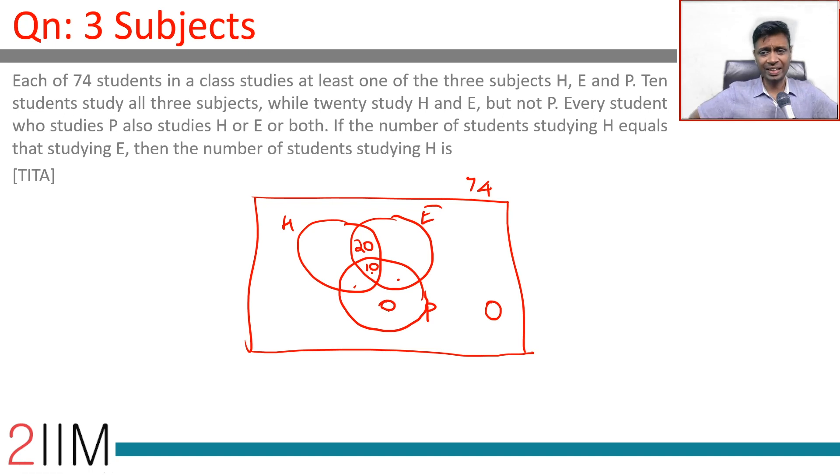The number of students studying H equals that studying E. Then the number of students studying H is wonderful. So think about this. If you have A here and B here, C here and D here. A plus B is equal to C plus D.